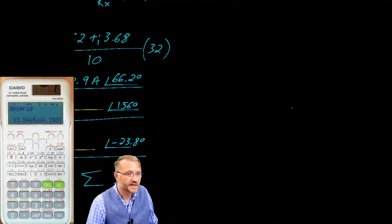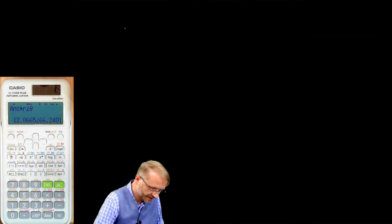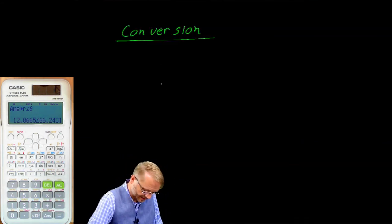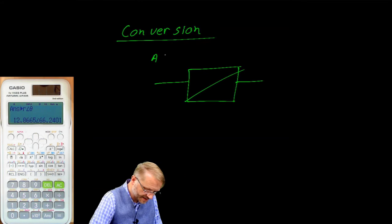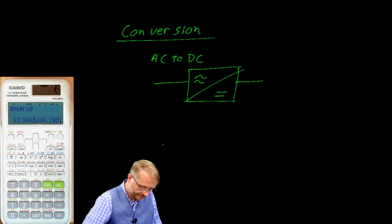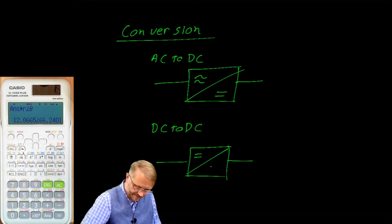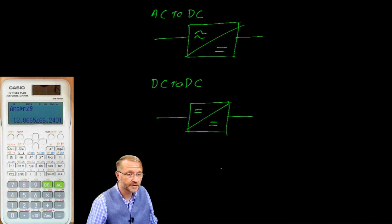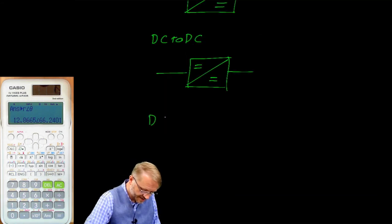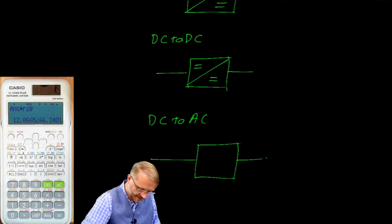That finishes AC for today. Before we leave, I wanted to talk about conversion. Specifically, conversions between AC to DC. So we have AC in, DC out. DC to DC. It's a magic box. It takes DC in, gives you a different direct current out. DC out. And finally, DC to AC. Again, another magic box. This one, it takes DC in and gives you AC out.